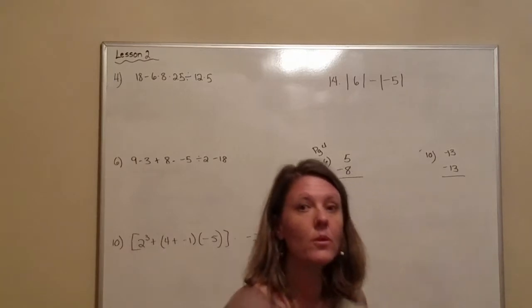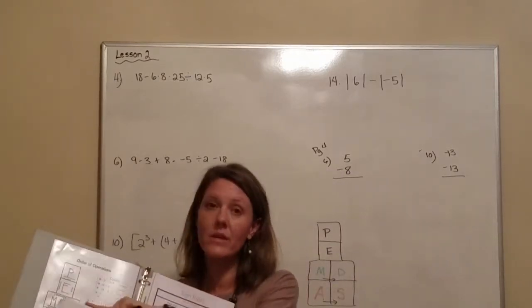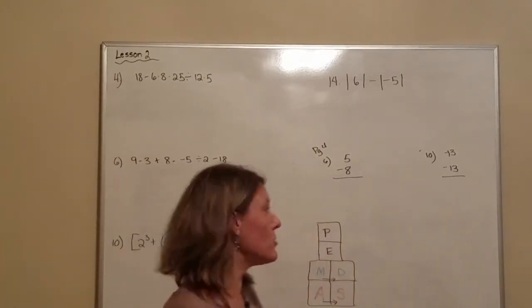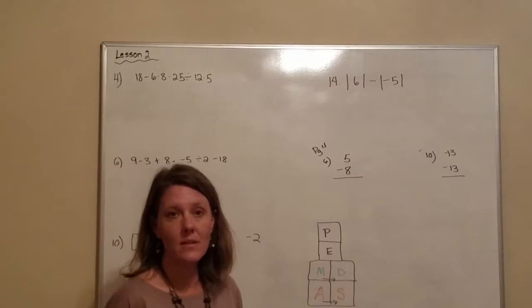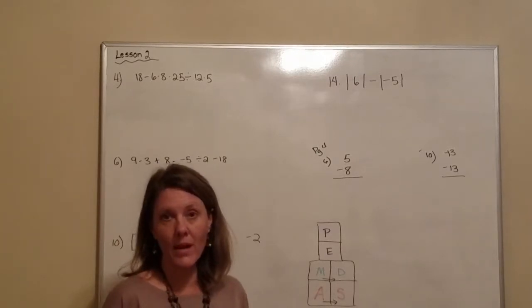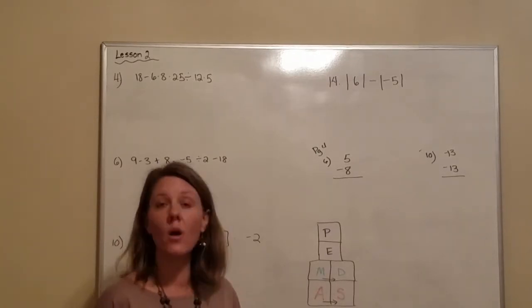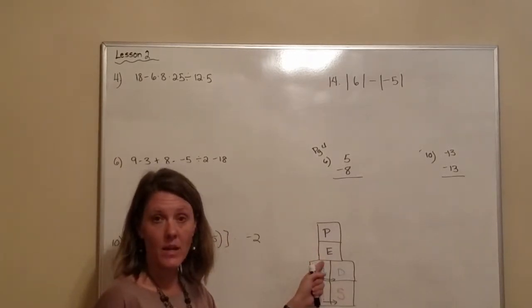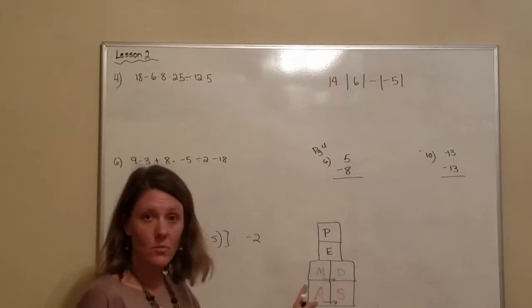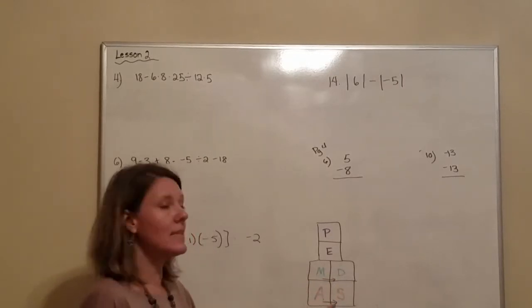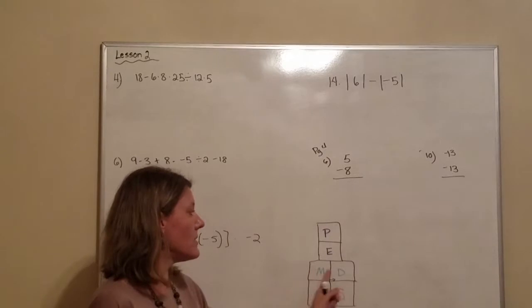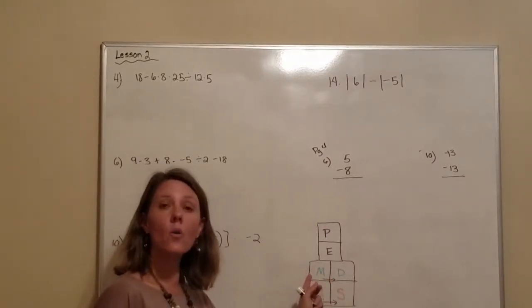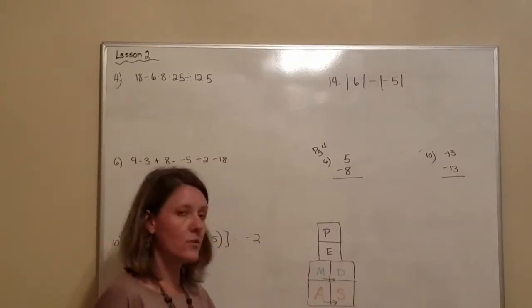In your notebook, right here, these notes will help you out. But I went ahead and drew some of it on the board. Remember that sentence, please excuse my dear Aunt Sally. That helps you know the order you're supposed to be doing it in. Please excuse: powers and exponents. My dear: multiply divide. Aunt Sally: add and subtract. And the reason it's lined up this way is because you do these according to how they happen, left to right.